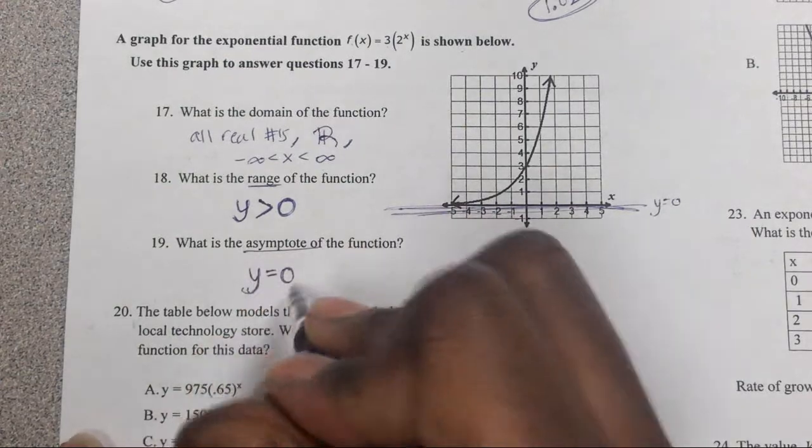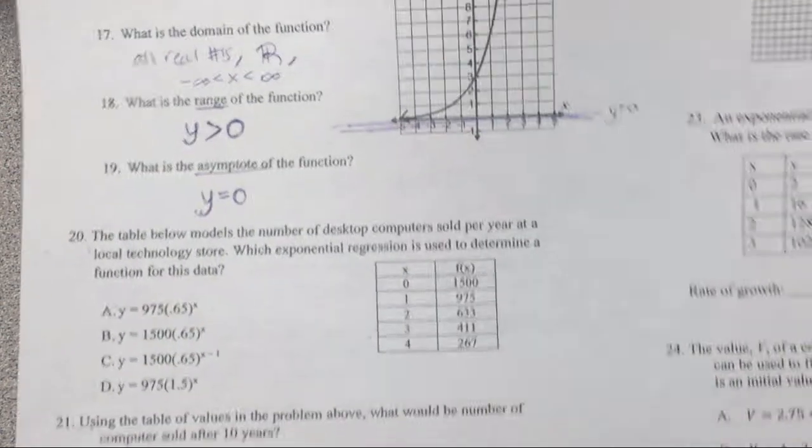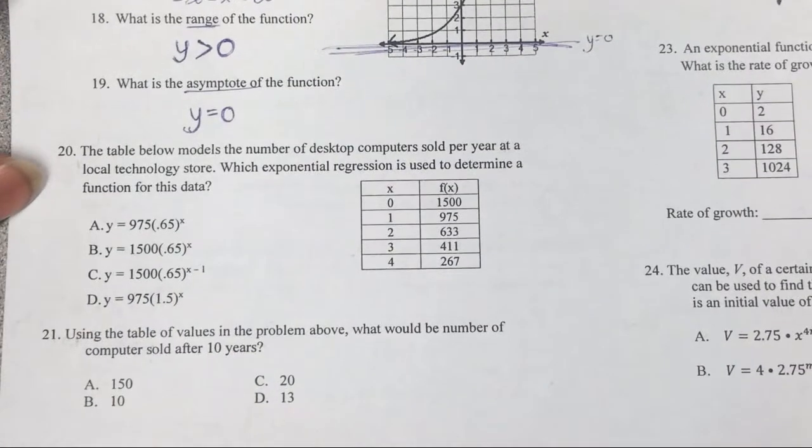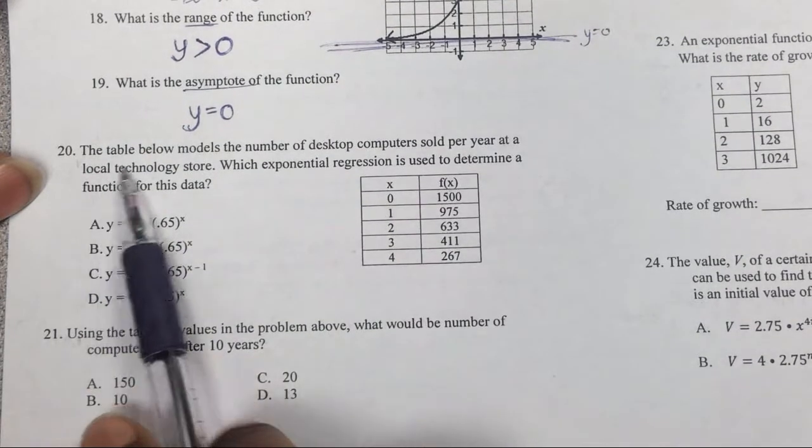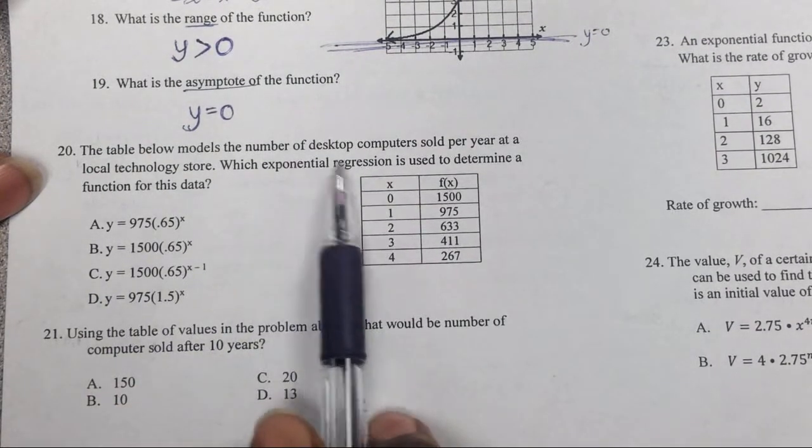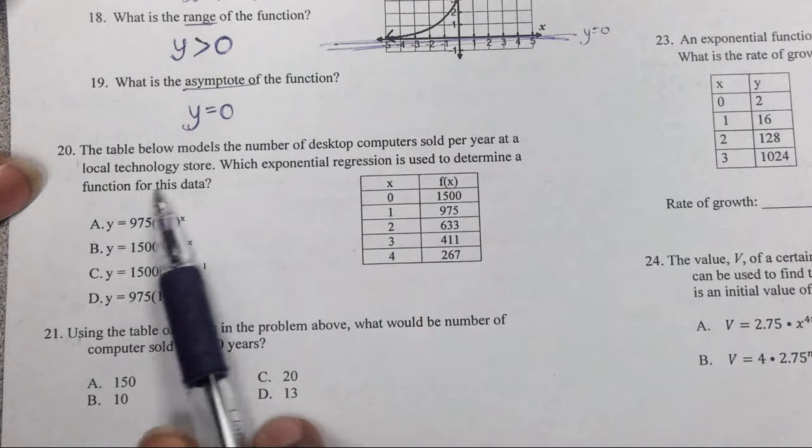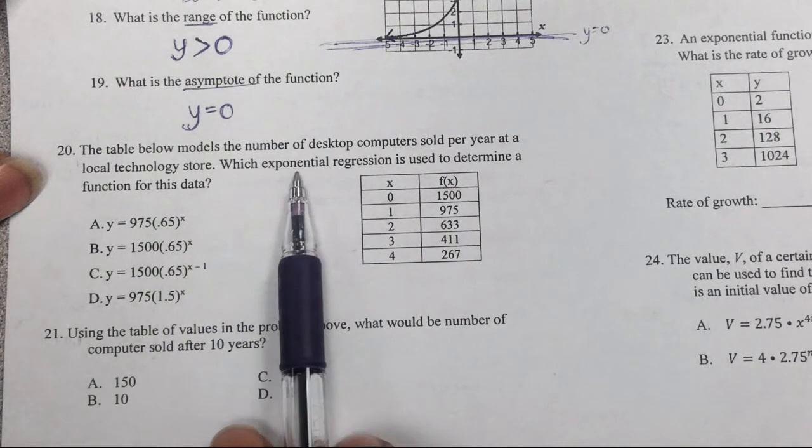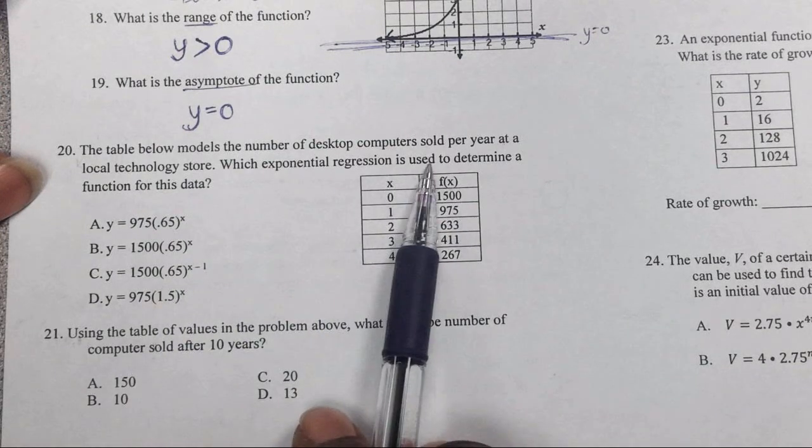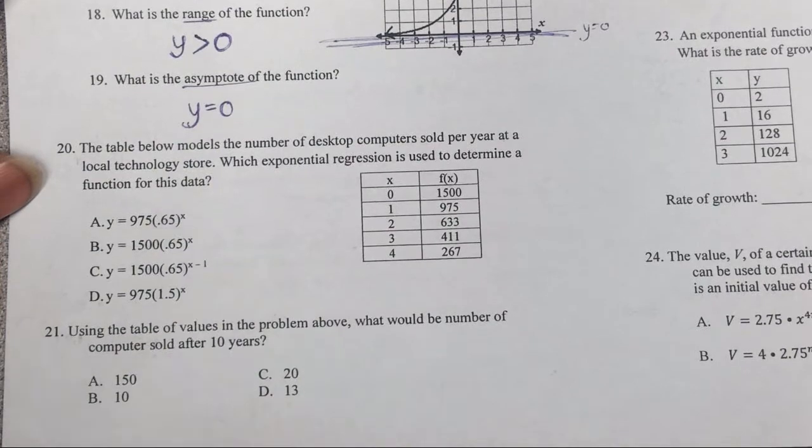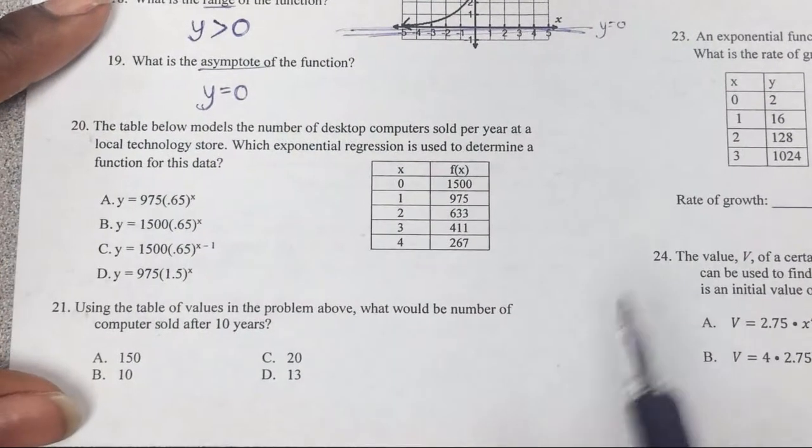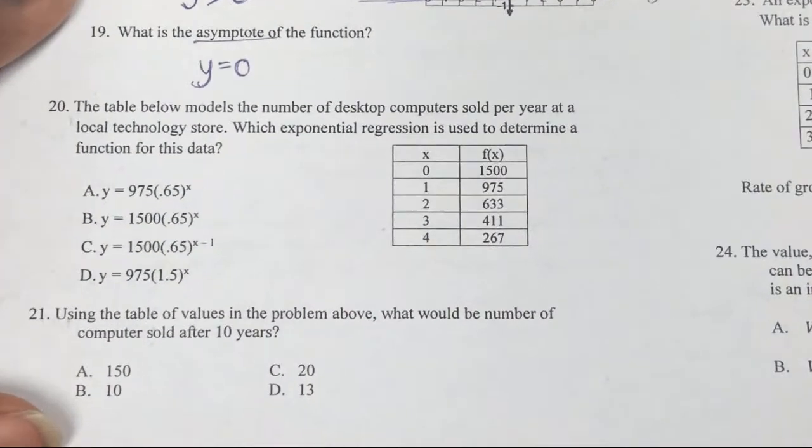Line number 20. The table right here models the number of desktop computers sold per year at a local technology store. Which exponential regression is used to determine a function for this data? So it doesn't really tell you if it's increasing or decreasing, but look at your table.